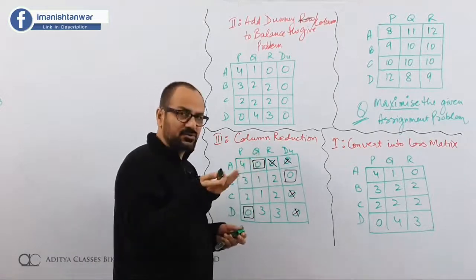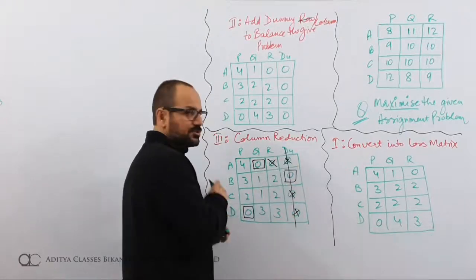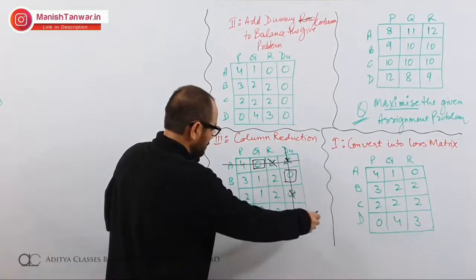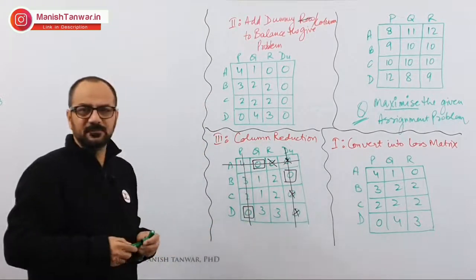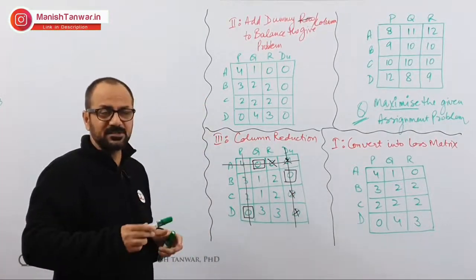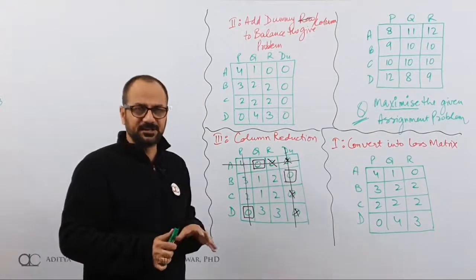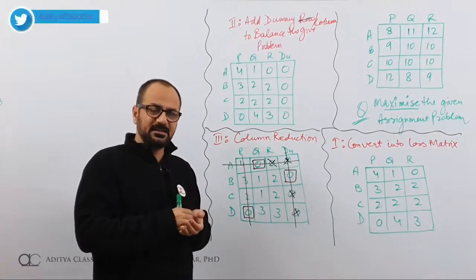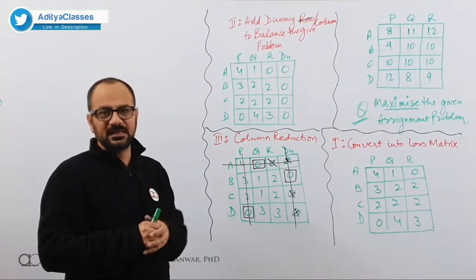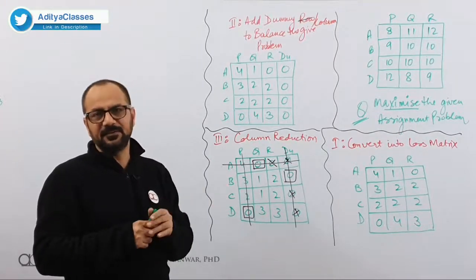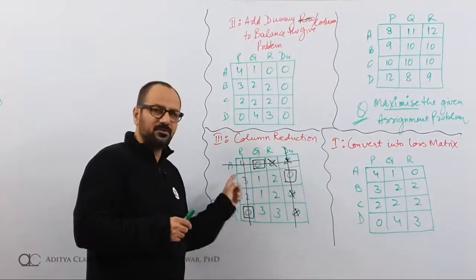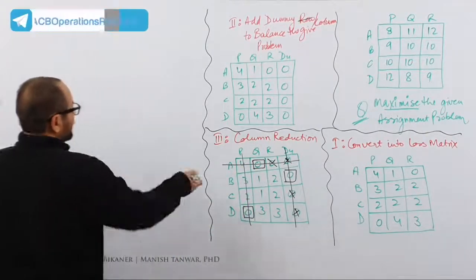We resolve degeneracy by getting 3 lines to cut all zeros — selecting rows and columns which cover maximum zeros. 4 zeros cut in one stroke; then another good stroke. You can go with either of the remaining rows. In operations research, majority of algorithms are iterative in nature, so if you make an error in this step it gets rectified in the next iteration, so long as you stick with the basics and do calculations correctly. You can pick this column or go with that row — either way, now I have my new matrix.